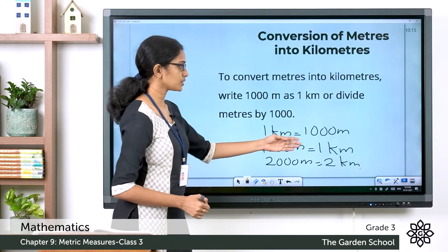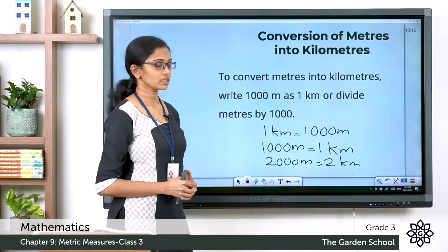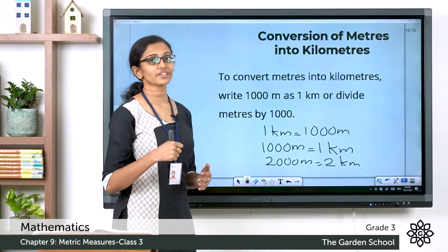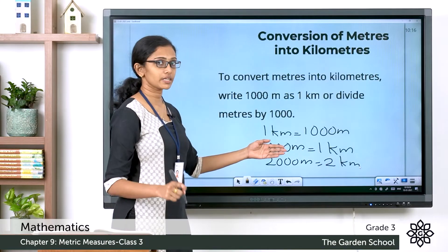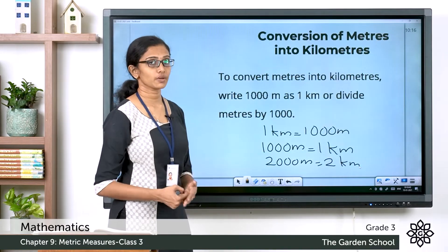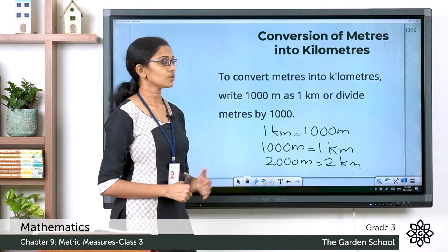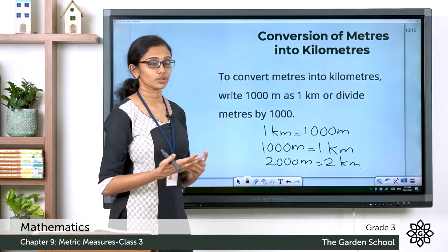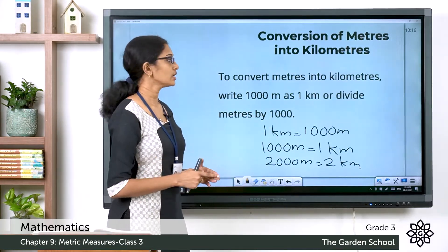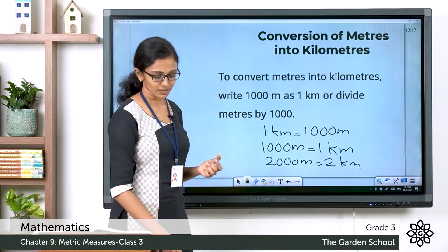Notice that 1000 meters equals 1 kilometer, which equals 1000 divided by 1000. If we divide the given measurement in meters by 1000, we get the equivalent in kilometers. So 2000 meters divided by 1000 equals 2 kilometers. To convert from meters to kilometers, divide by 1000, or replace every 1000 meters with 1 kilometer.